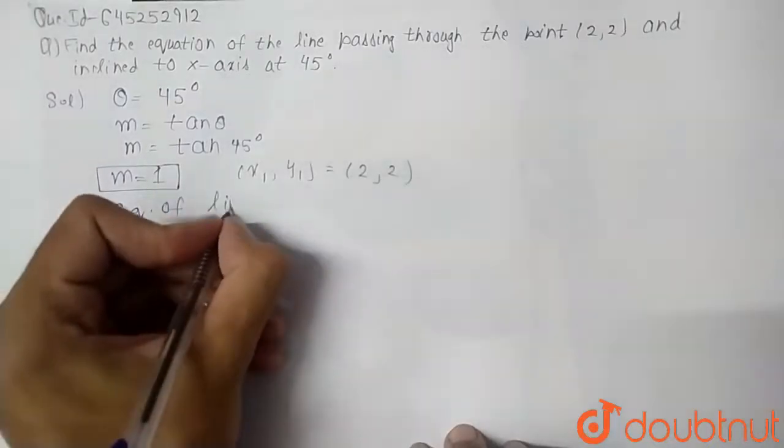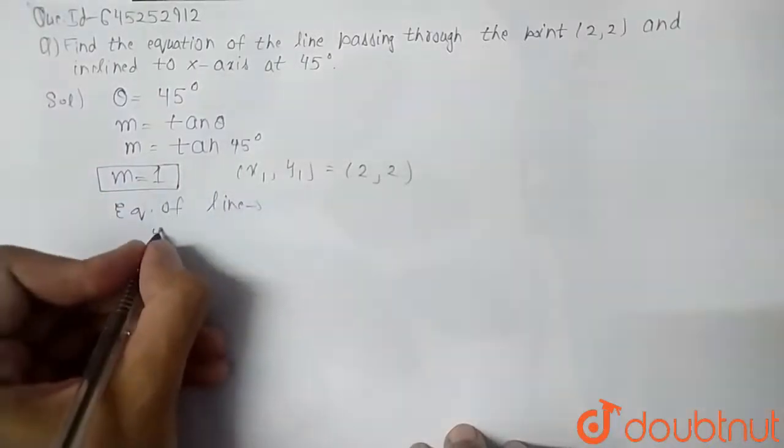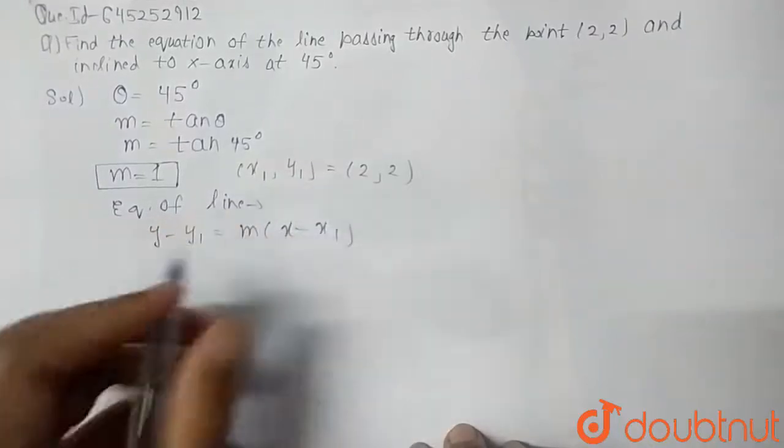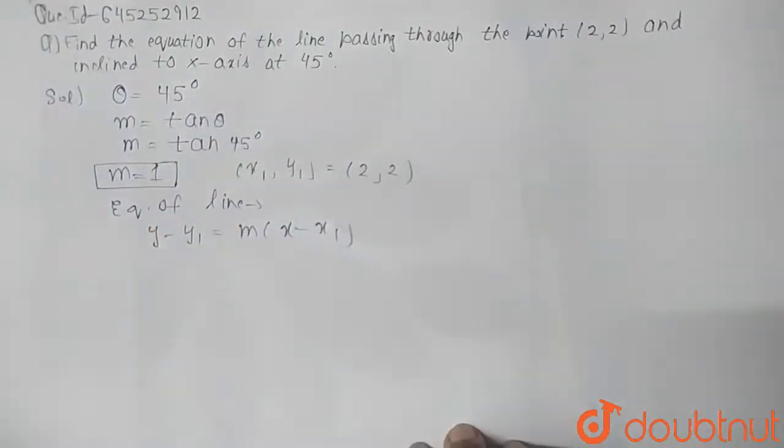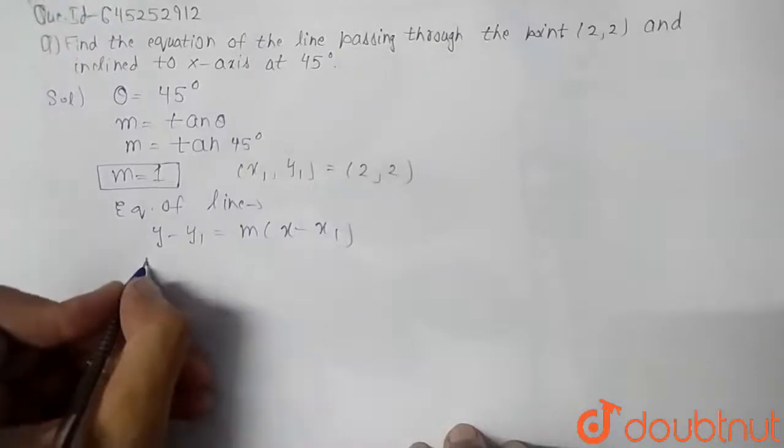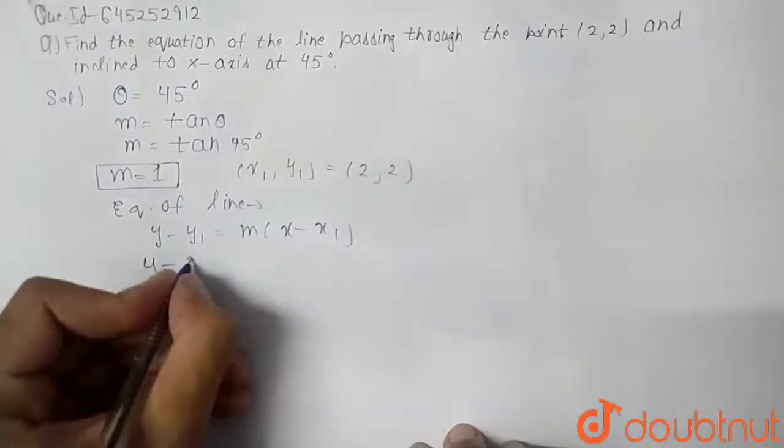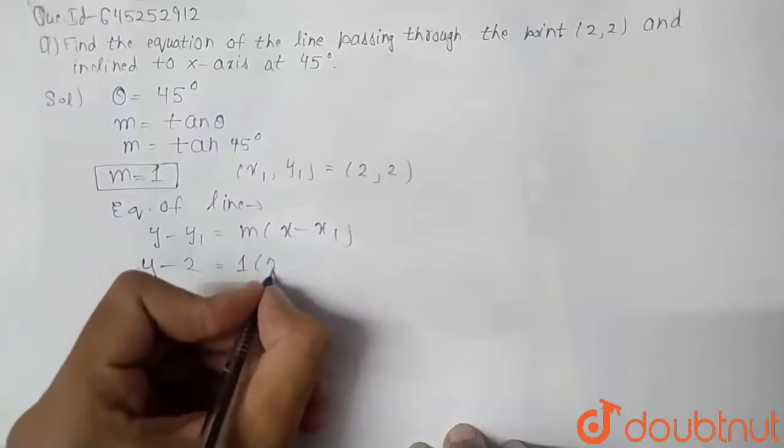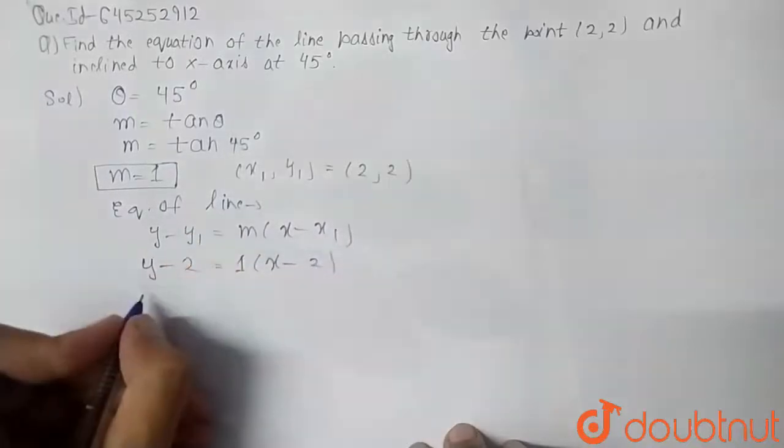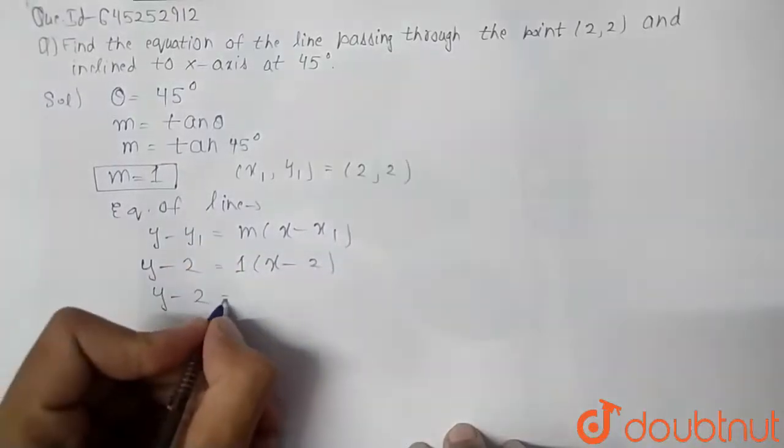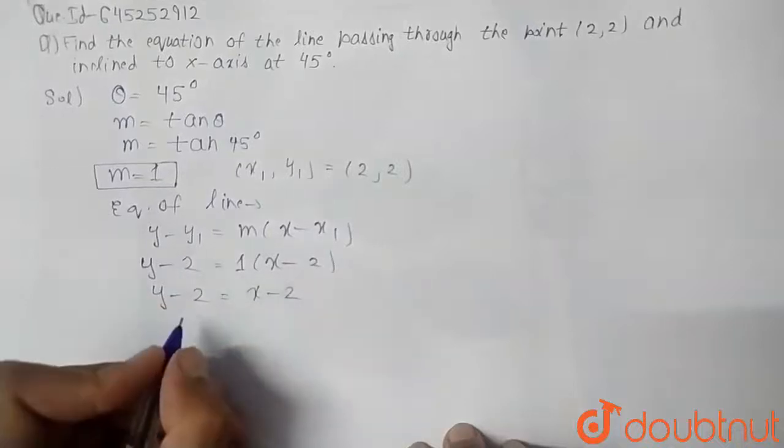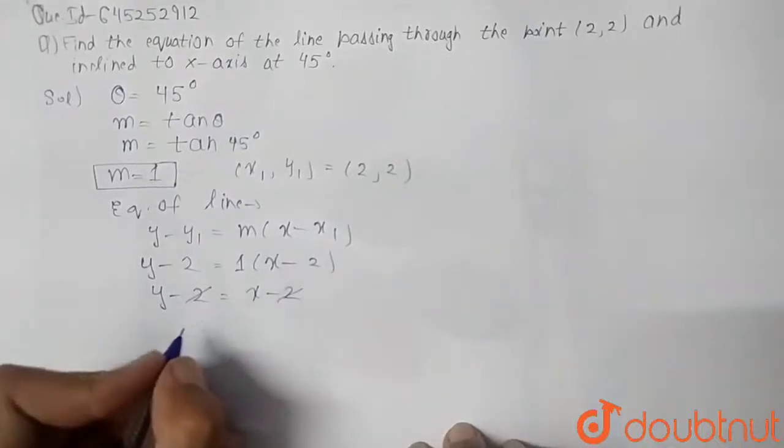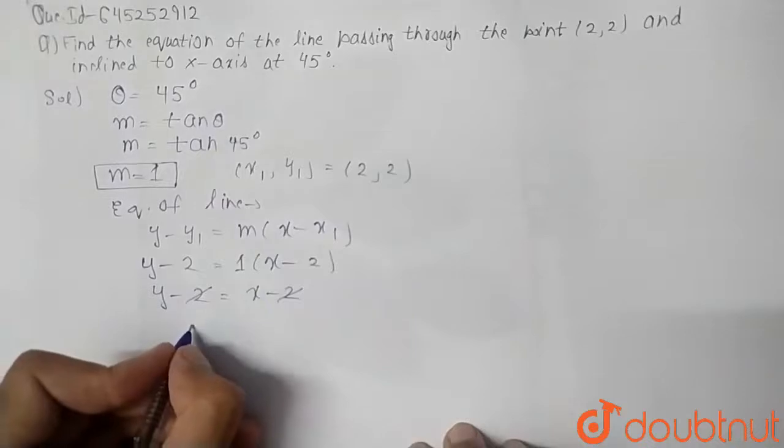Equation of line we have y minus y1 equal to m times (x minus x1). So we have y minus y1, y1 is 2, which is equal to m, m is 1, times x minus x1, x1 is 2. So we have y minus 2 equals x minus 2. Minus 2 is cancelled, so our required equation is x equals y.